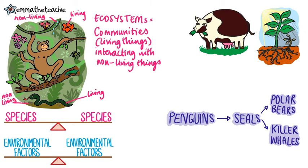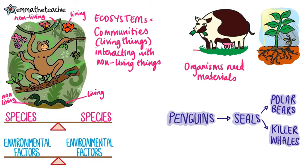To survive and reproduce, organisms require a supply of materials from their surroundings and from the other living things there. For example, cows need grass and plants need sunlight, water and nutrients as well as other things.